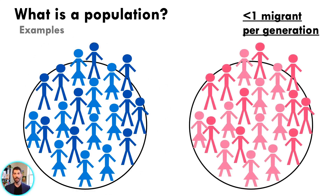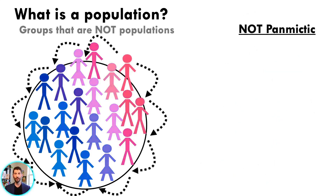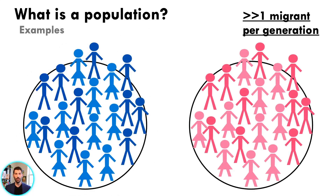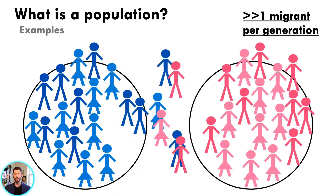The other requirement is less than one migrant per generation between groups. What matters is the average pattern over hundreds or thousands of years. With just one migrant moving between groups every generation, the distinct genetic profile of each population is erased. So what are we trying to avoid? A group where individuals only marry their next-door neighbors instead of mating randomly, or a group with massive gene flow.